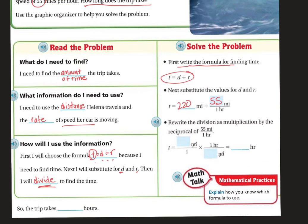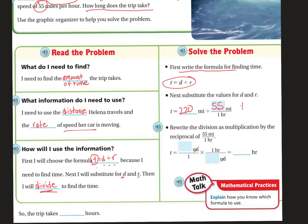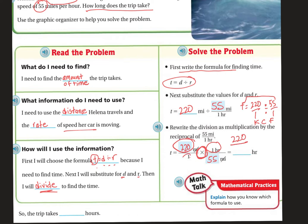So I'm going to write the reciprocal. T equals 220 over 1, divided by 55 over 1. Remember that whenever you have two fractions, you do keep, change, flip. So we keep the 220, change the division to multiplication, and flip 55 over 1 to 1 over 55. Now we have 220 times 1, which is 220, and 1 times 55, which is 55. Cross out the miles, and we're left with hours. 220 divided by 55 equals 4 hours.